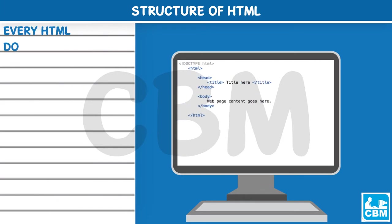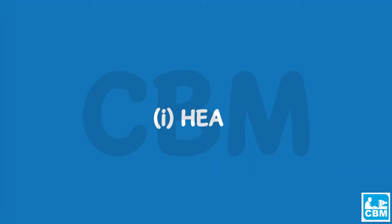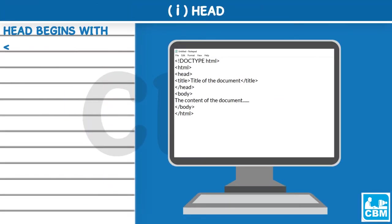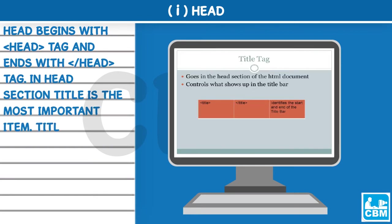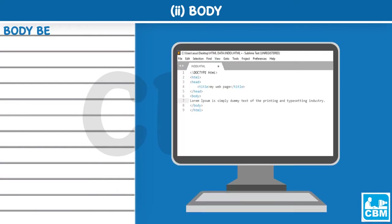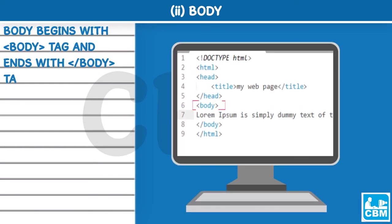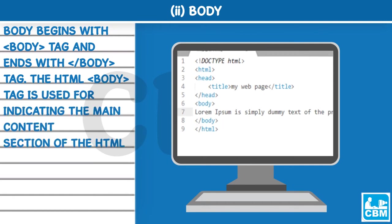Structure of HTML. Every HTML document has the following two sections and must begin and end with an HTML tag. 1. Head: begins with the head tag and ends with the close head tag. In the head section, the title is the most important item; it begins with the title tag and ends with the close title tag. 2. Body: begins with the body tag and ends with the close body tag. The HTML body tag is used for indicating the main content section of the HTML document.